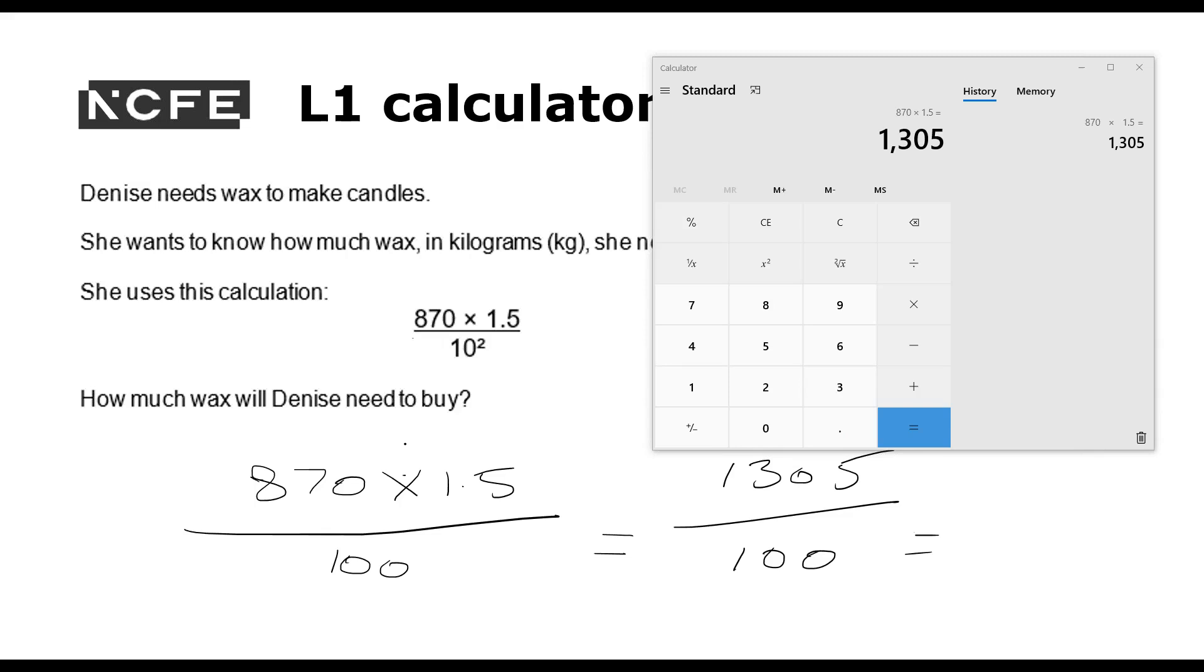And then divide by 100. And I'm not going to plug that into the calculator because it will actually be faster for me not to do that. So 1305 divided by 100 is 13.05 and our units are kilograms. So quite straightforward. We didn't have to do any substitution there. It was simply the order of operations.